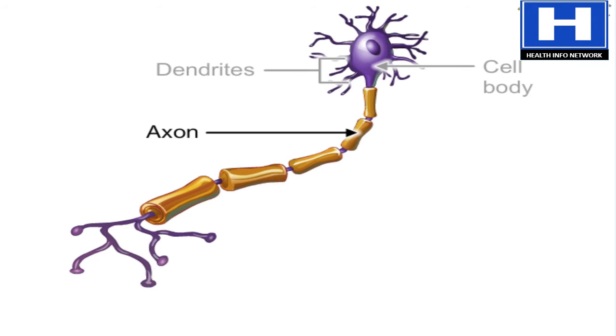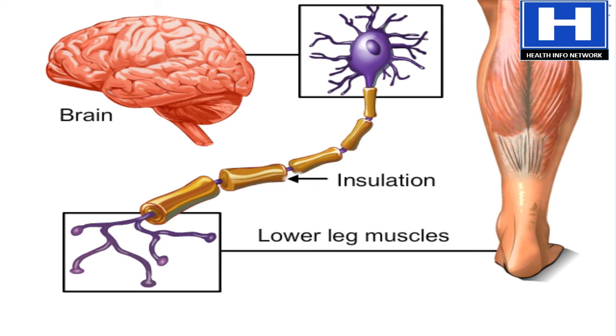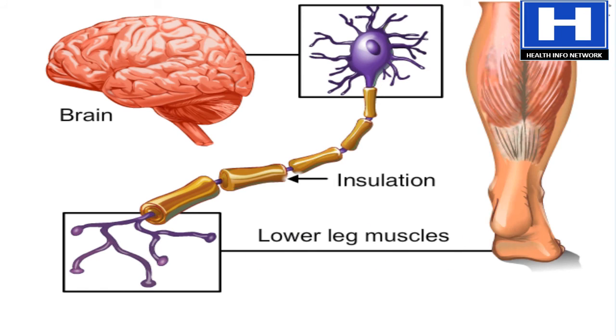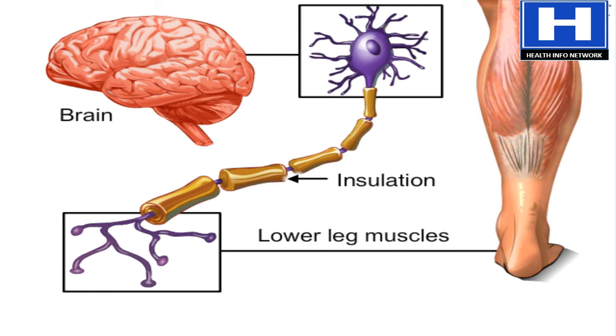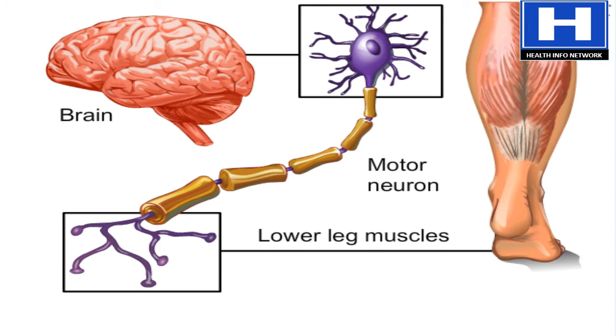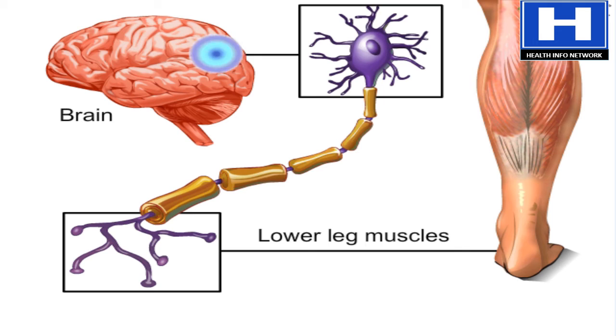The axon transmits signals away from the cell body to other neurons. Many neurons are insulated like pieces of electrical wire. The insulation protects them and allows their signals to move faster along the axon. Without it, signals from the brain might never reach muscle groups in the limbs. Motor neurons are responsible for voluntary control of the muscles all over the body.